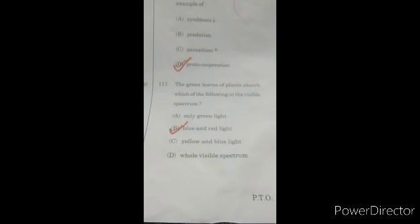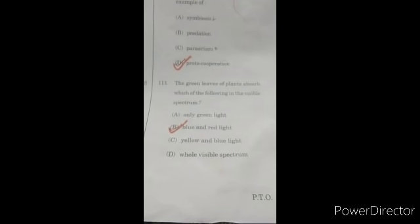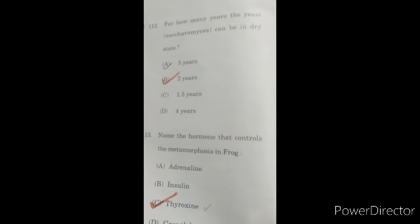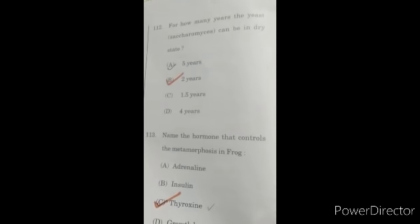Question 111: the green leaves of plants absorb which of the following in the visible spectrum? B option, blue and red light. Question 112: how many years can the yeast Saccharomyces be in dry state? The correct option is B, two years. Name the hormone that controls the metamorphosis in frog: C option, thyroxine.